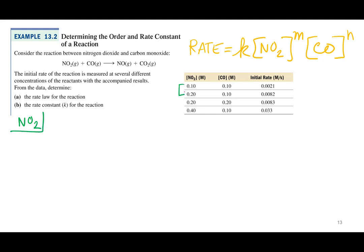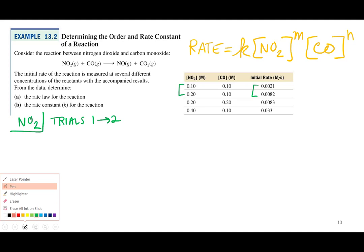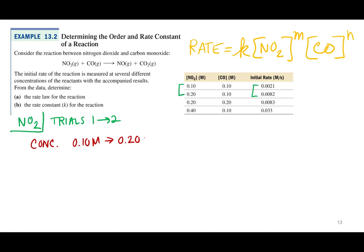Let's figure out the order for NO₂ using trials one and two. The concentration went from 0.10 molar to 0.20 molar — that doubled (0.20 over 0.10 equals two).